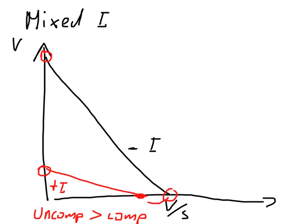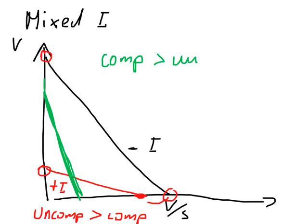If the competitive component is stronger, the plot looks more like a competitive inhibitor — Vmax would be close to unchanged, so those two points are close together, whereas the other pair of points are far away from each other. In this case the competitive component is stronger than the uncompetitive one.